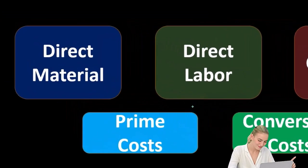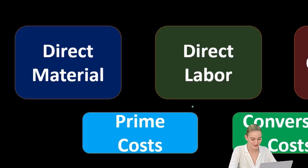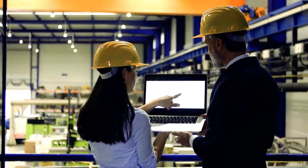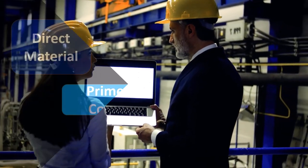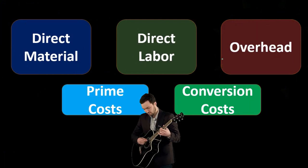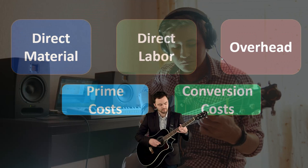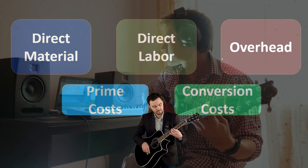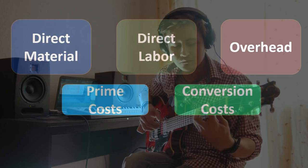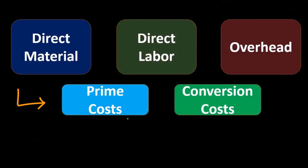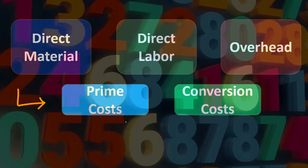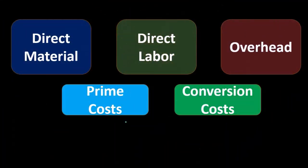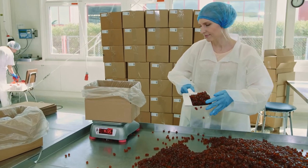Direct costs — direct materials and direct labor — are both direct costs, which happen to be the same two components as prime costs, but for different reasons. These two are direct costs because we can apply those activities to a particular unit. In a job cost system, we can apply them to a particular guitar because we know which guitars were worked on. Overhead was indirect because, in a job cost system, we wouldn't know which guitar to apply overhead costs to. Prime costs use the same factors as direct costs but for a different reason — prime meaning the primary factors of production, the primary expenditures most associated with manufacturing the inventory.